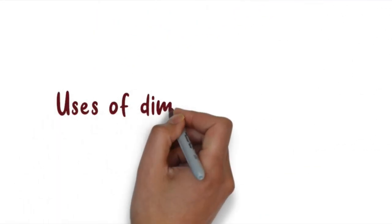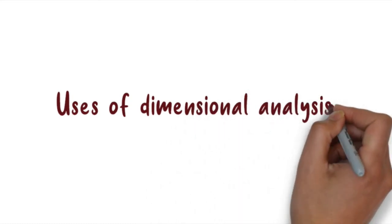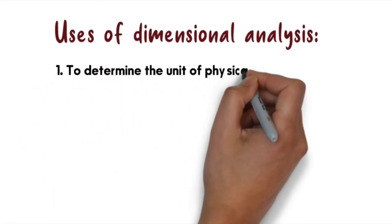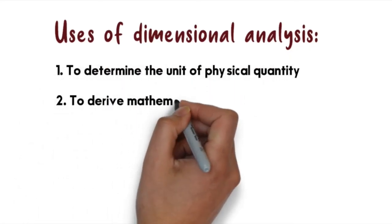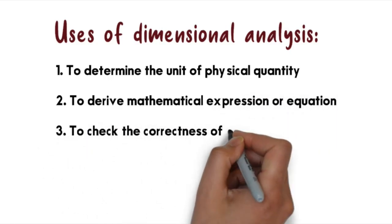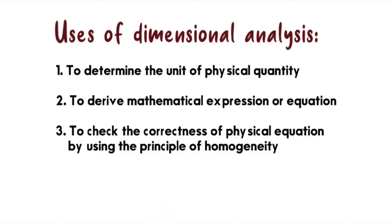There are few uses of dimensional analysis. So I include three uses of dimensional analysis. The first one is to determine the unit of physical quantity, to derive mathematical expression, and to check the correctness of physical equation by using principle of homogeneity.